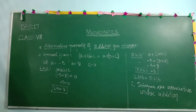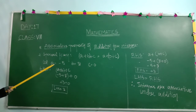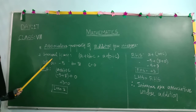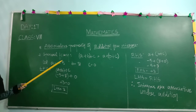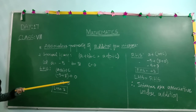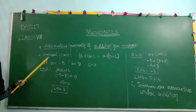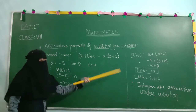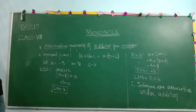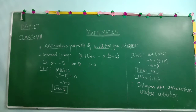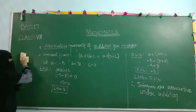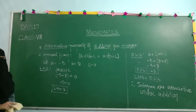Hopefully this is clear. The steps are simple: write associative property of the operation for integers, write the general form, choose your integers, simplify LHS and RHS separately, then check whether they are equal or not. If equal, integers are associative under that operation. Next we are going to check associative property of multiplication.